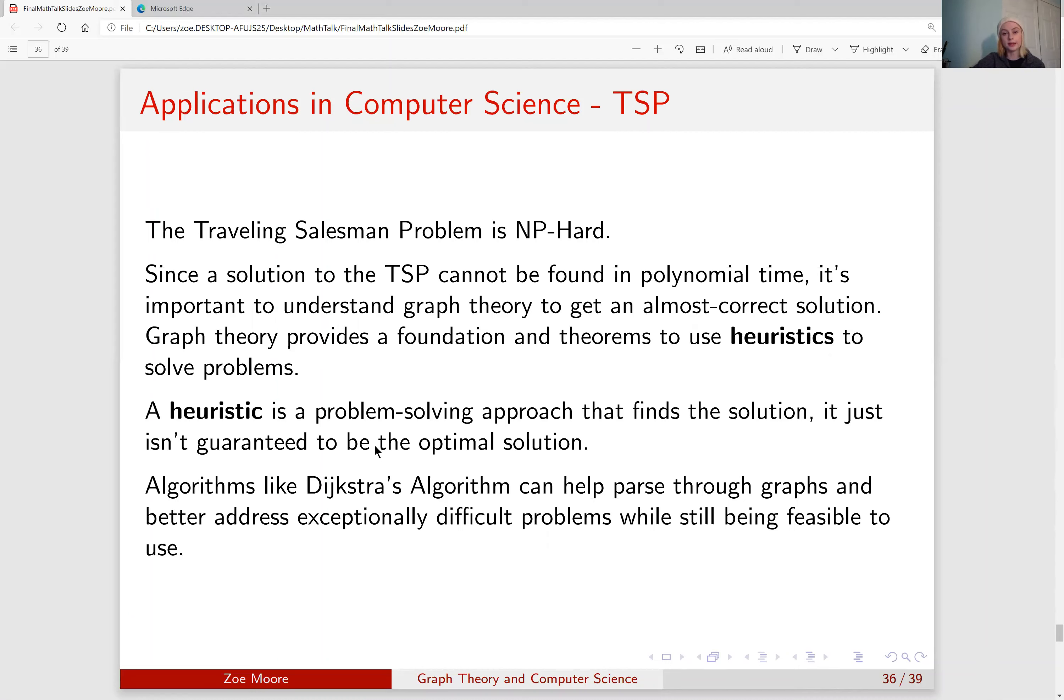The traveling salesman problem is an NP-hard problem, meaning that there is no easy way to find the guaranteed shortest path for the traveling salesman problem. Since the solution cannot be found in polynomial time, it is important to understand graph theory to get an almost correct solution. Graph theory provides a foundation and theorems that can be used to provide us heuristics to solve the problem. A heuristic is a problem solving approach that finds the solution, it just isn't guaranteed to be the optimal solution. Algorithms like Dijkstra's algorithm and modifying or adjusting them can help us parse through graphs and better address exceptionally difficult problems while still being feasible to solve them.